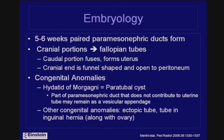The fallopian tubes form at around five to six weeks from the paramesonephric ducts. The cranial portion becomes the fallopian tubes, where the caudal portion fuses to form the uterus. The cranial end is funnel-shaped and open to the peritoneum near the ovary. As for congenital anomalies, paratubal cysts, also known as hydatid of Morgagni, are small vesicular appendages of the paramesonephric ducts that are common.